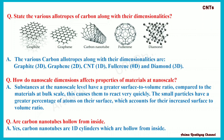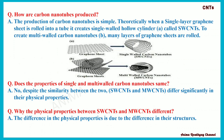Are carbon nanotubes hollow from inside? Yes, carbon nanotubes are one-dimensional cylinders which are hollow from inside. How are carbon nanotubes produced? Theoretically, when a single layer graphene sheet is rolled into a tube, it creates a single-walled hollow cylinder called SWCNT, as shown in figure A. To create multi-walled carbon nanotubes, many layers of graphene sheets are rolled, as shown in figure B.